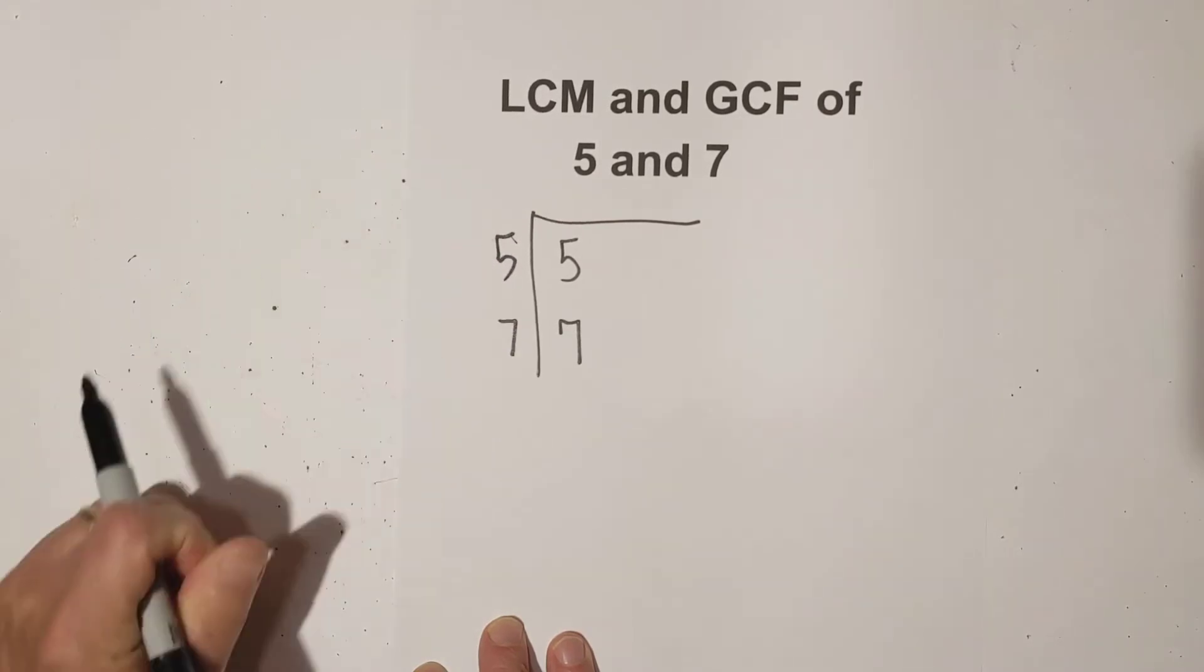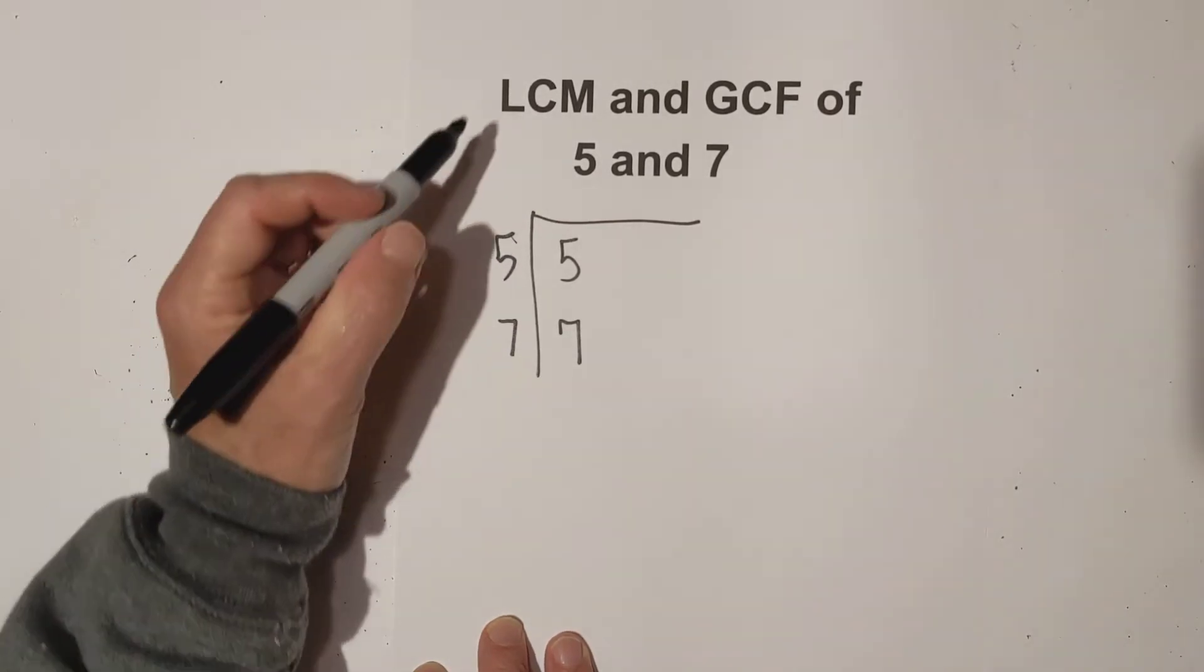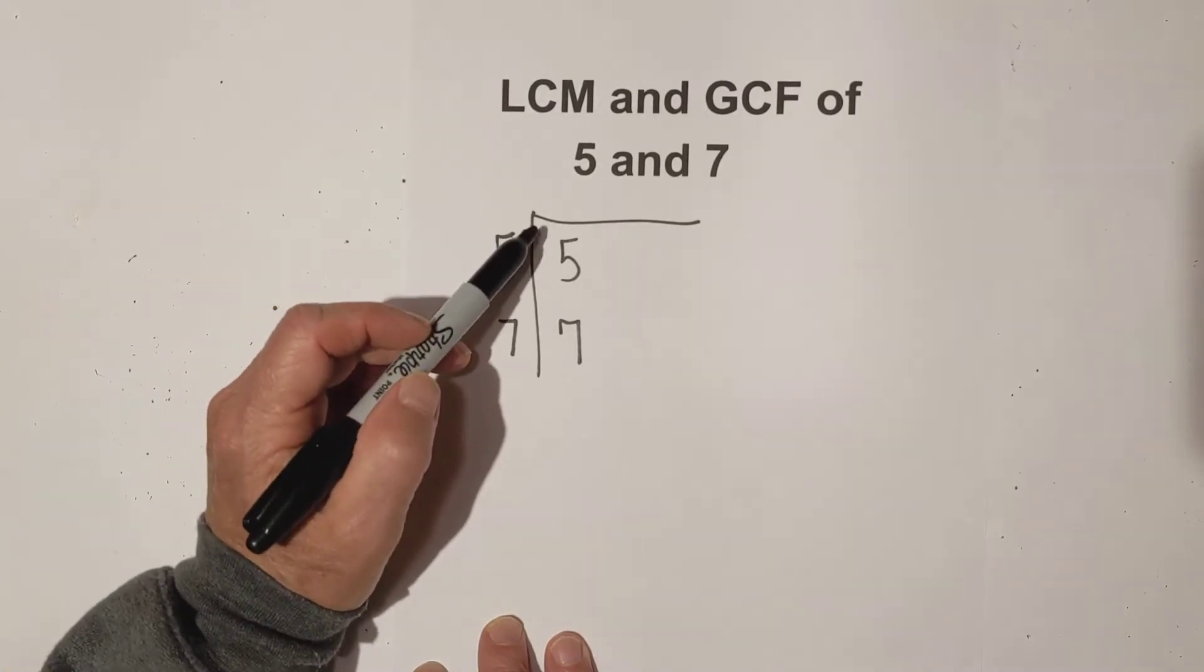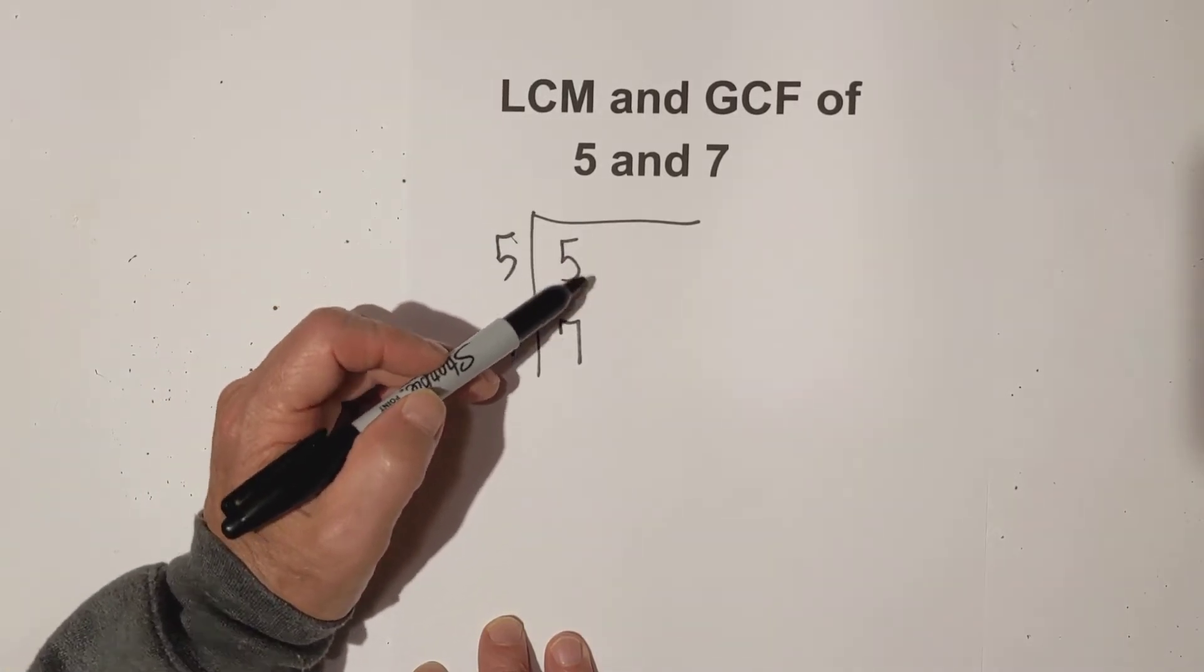So here are the prime numbers of 5 and 7 looks kind of funny. Now the rule for the LCM is you basically multiply all the prime numbers together.